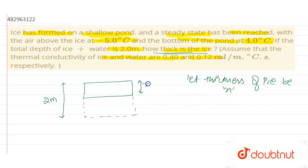We have to find the value of x. If this is x, the bottom of the pond is 2 minus x meters. The thermal conductivity k of water is 0.4 and k of ice is 0.12.